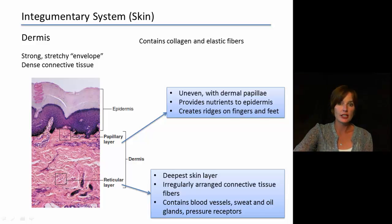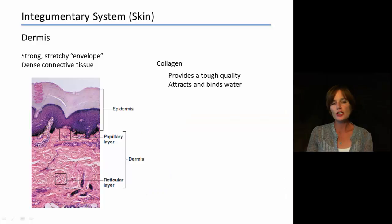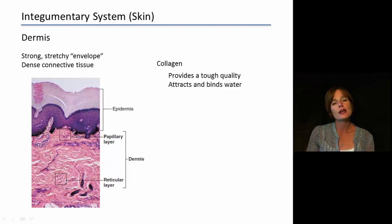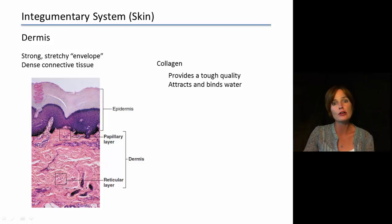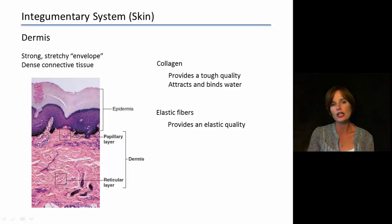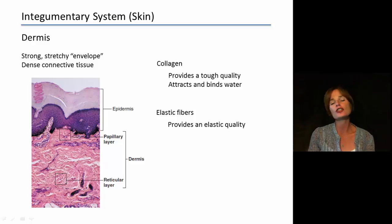Collagen is a protein that provides a very tough quality to our skin — it attracts and binds water, keeping our skin hydrated. As we age, we do not have as much collagen in our skin, which is one reason why we tend to have drier and drier skin as we get older. The elastic fibers provide an elastic quality to our skin, allowing it to stretch and then go back and hold its shape again. This also declines as we age, which is why our skin tends to become more saggy and wrinkled — a loss of that elastic quality.